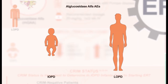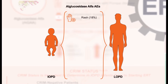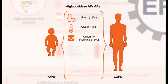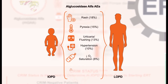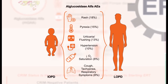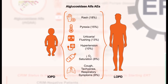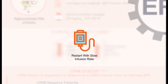Adverse events associated with alglucosidase alfa include rash in about 18%, pyrexia in 15%, urticaria and flushing in 13%, hypertension in 10%, and decreased oxygen saturation, cough, tachypnea, and other respiratory symptoms in approximately 8%. Some patients can develop anaphylaxis. These adverse events are often manageable with a pause in the infusion, restarting at a reduced rate, and treatment with medication.